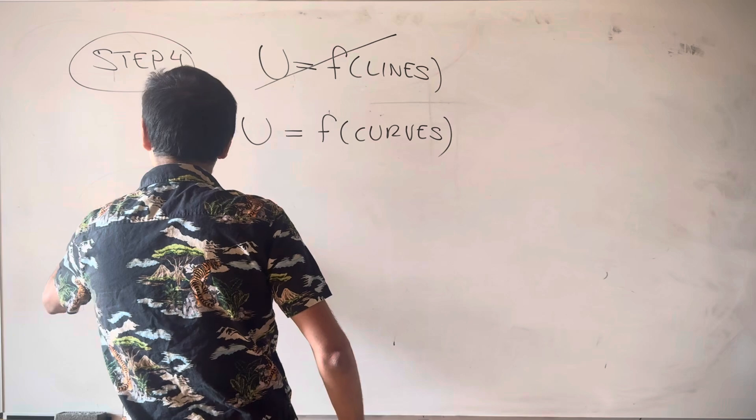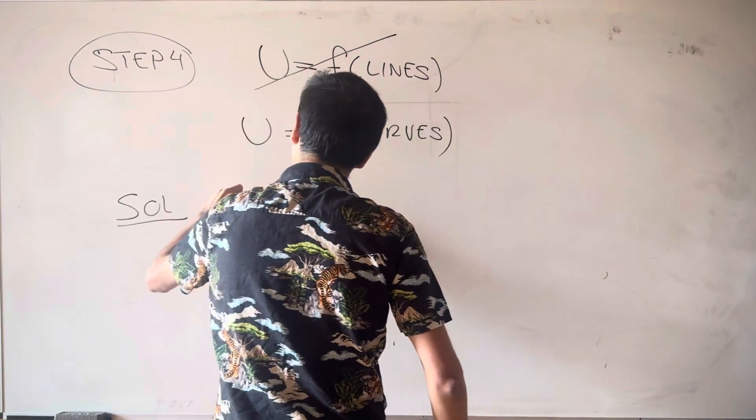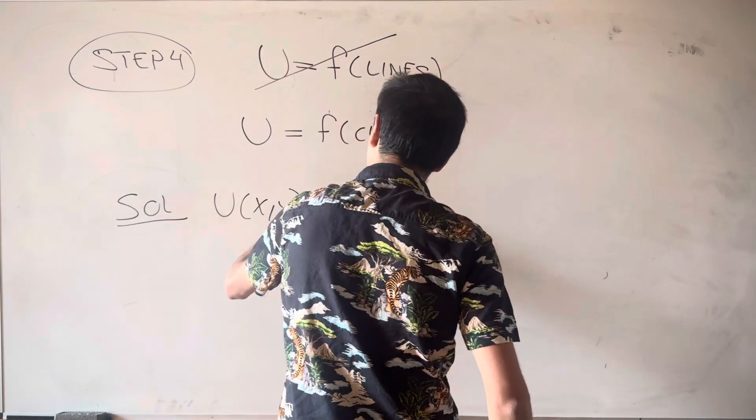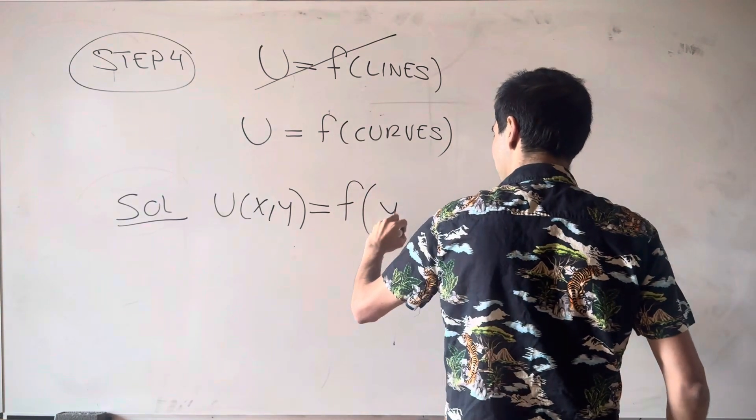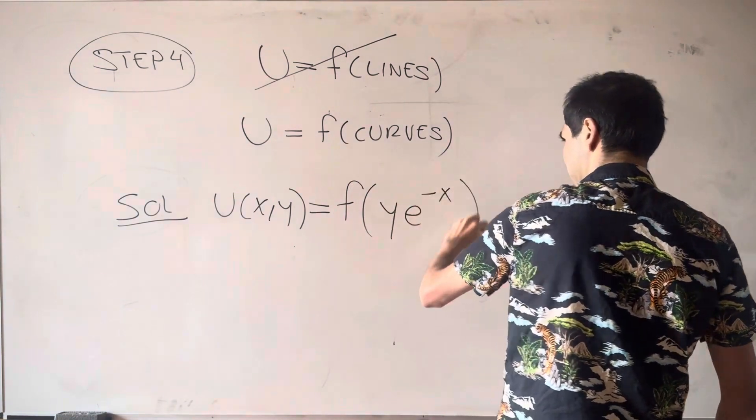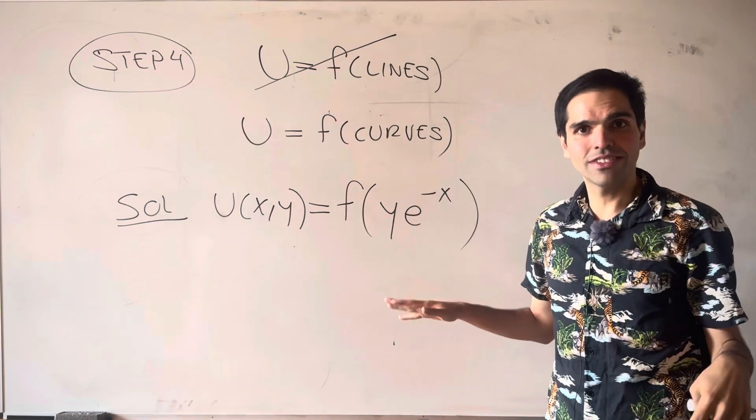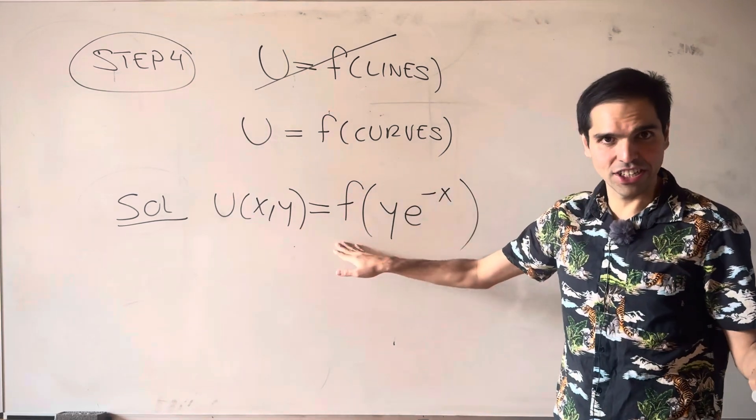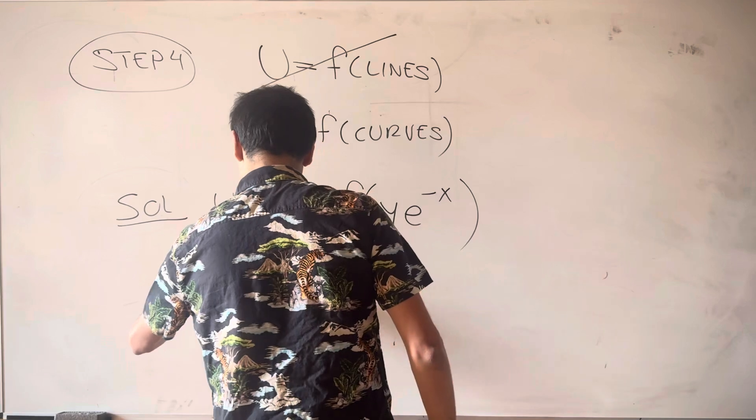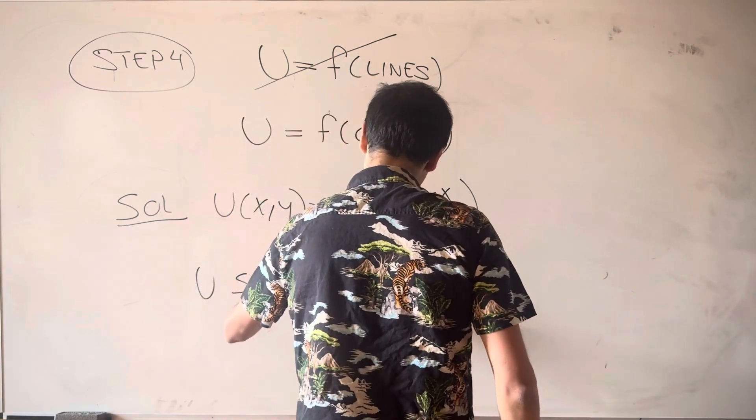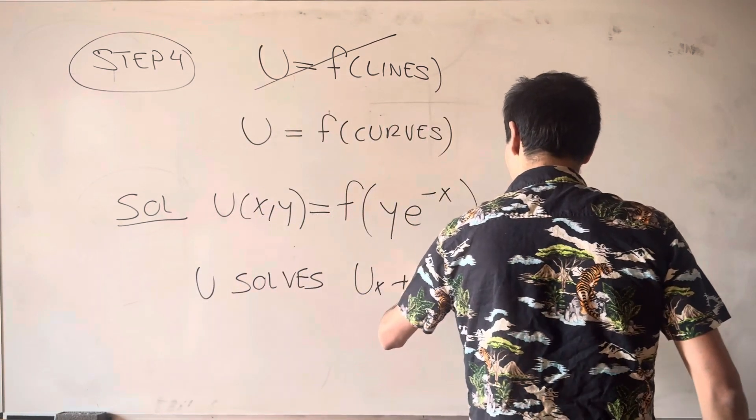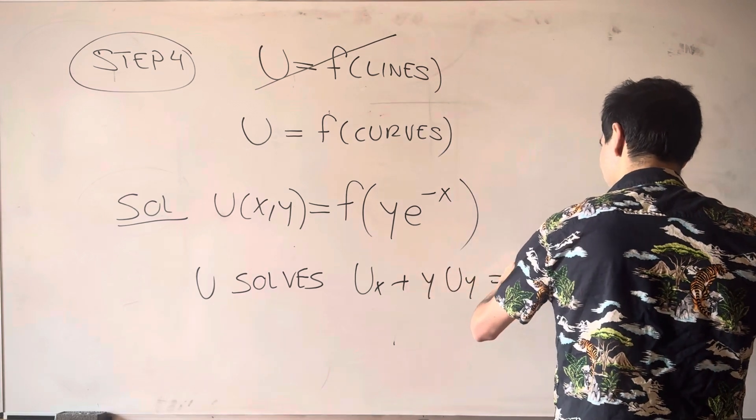So in this case, the solution is simply u of x, y is any function of the curves, which is any function of y e to the minus x. And in fact, if you want, and I believe this is done in the notes, you can actually check that you solved our differential equation, which is ux plus y uy equals 0.